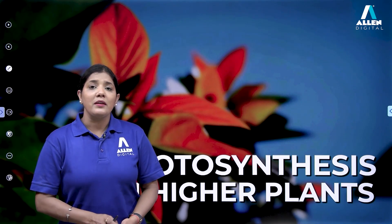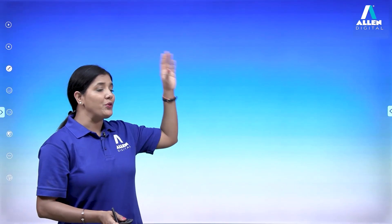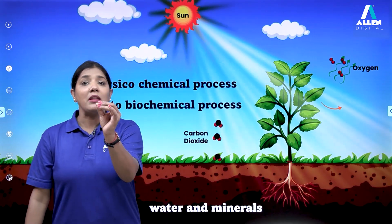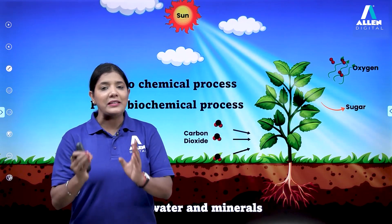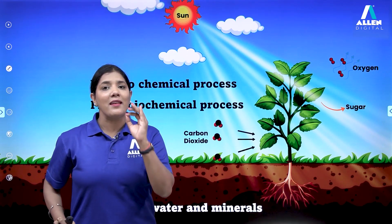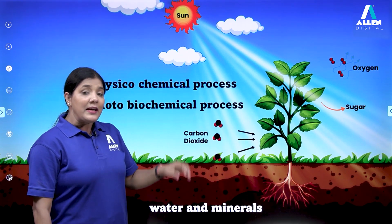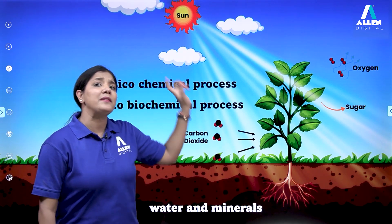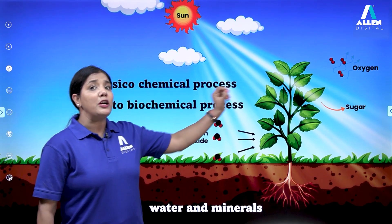The term 'photo' in photosynthesis comes from photons — light travels in discrete packages called photons. As you can see, we have a plant here which is trapping solar energy. The plant absorbs water and minerals from the soil, takes carbon dioxide from the atmosphere, and in the presence of sunlight with the chlorophyll pigment, it synthesizes sugar.